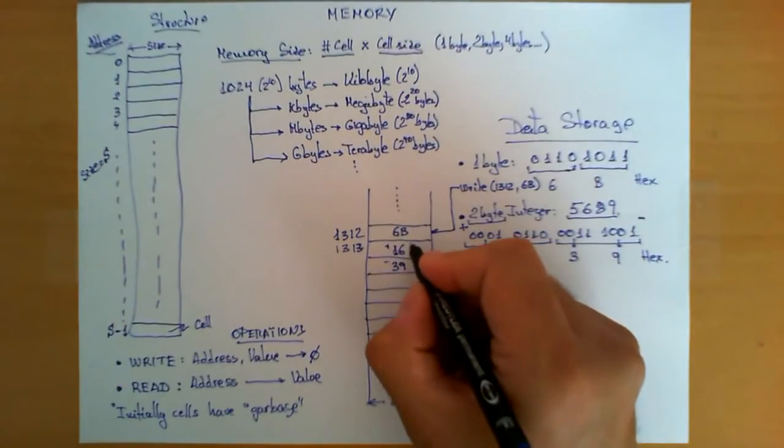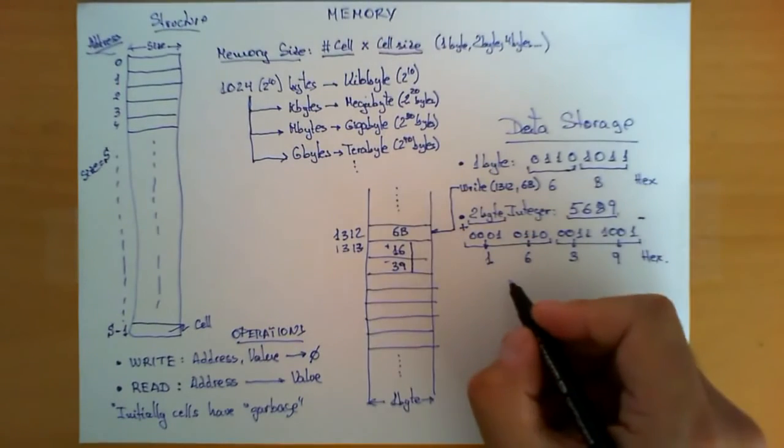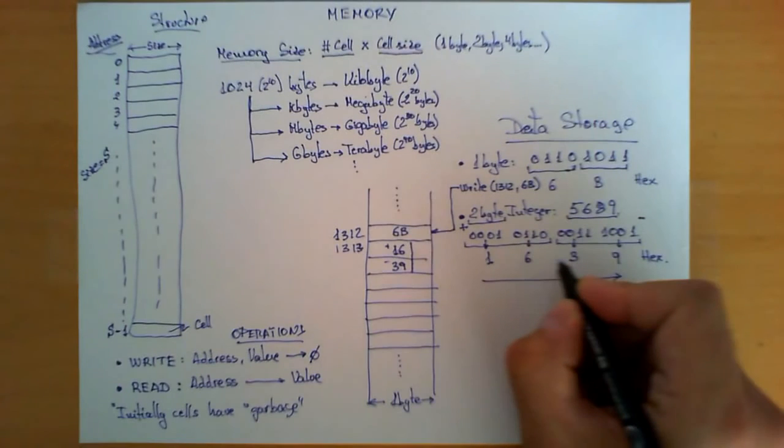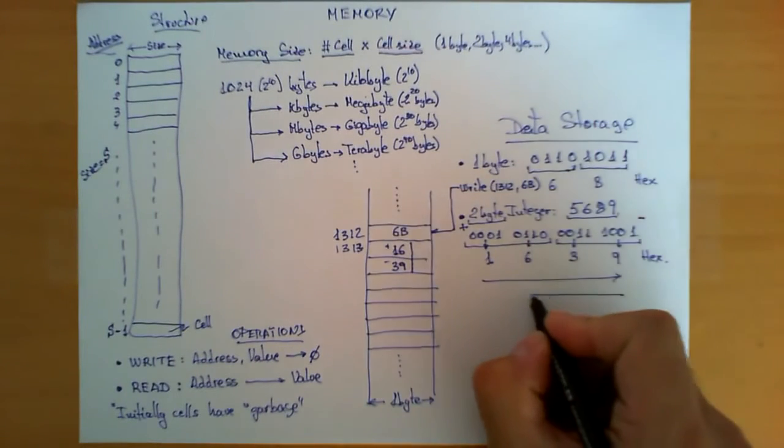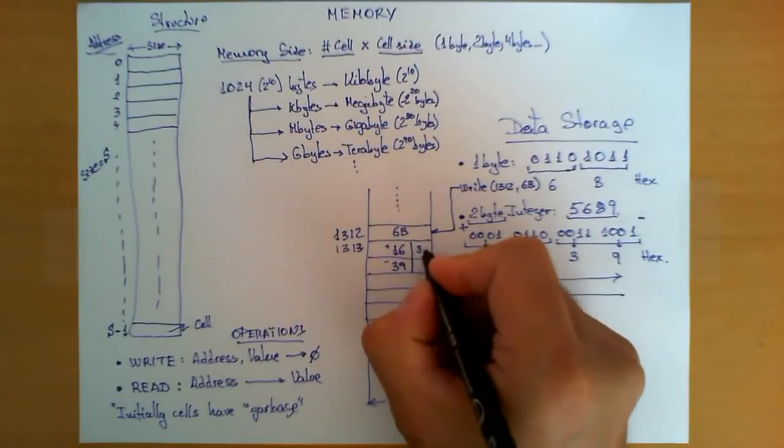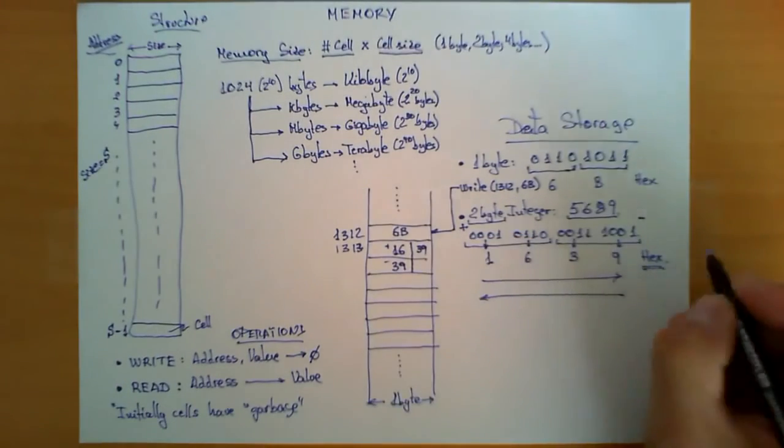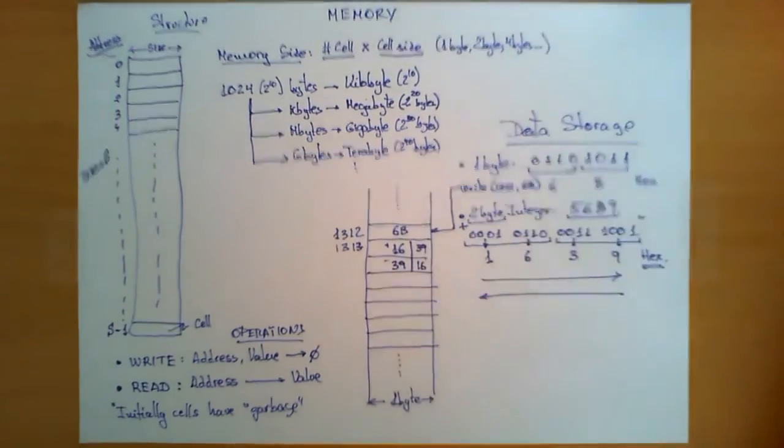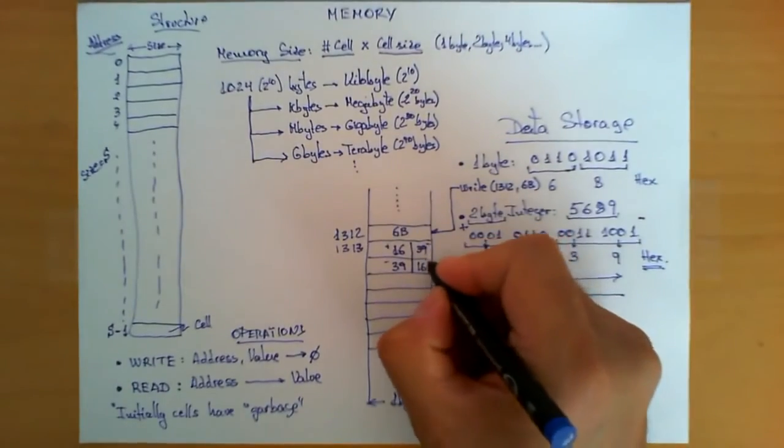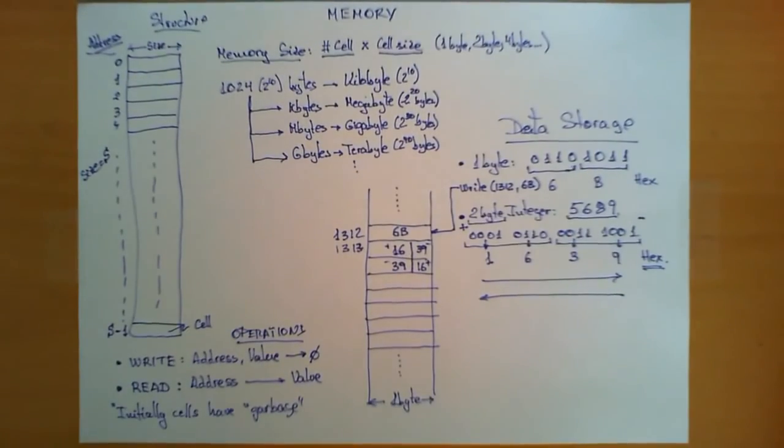However, another possibility would be to store it following the other order. So, we follow this order, first this byte, second this byte, but then we can also follow this convention, store first this byte, and then this byte. In other words, first the 39, always hexadecimal, remember, and then 16. Well, it turns out, the two choices are equally valid, and the two choices are sometimes used in different memory chips, in different computer systems.